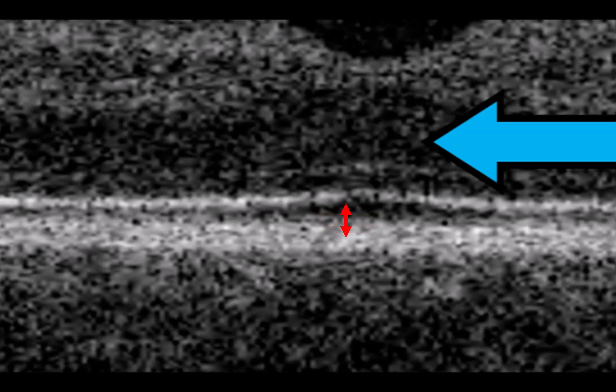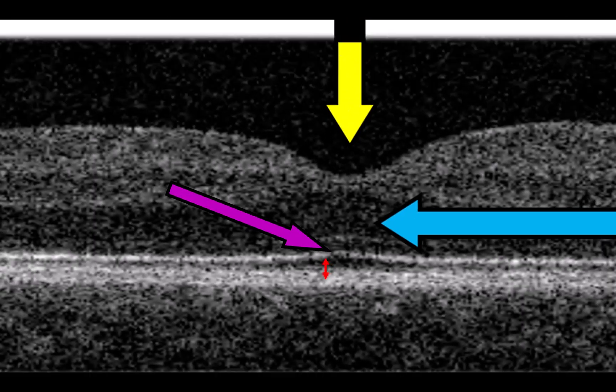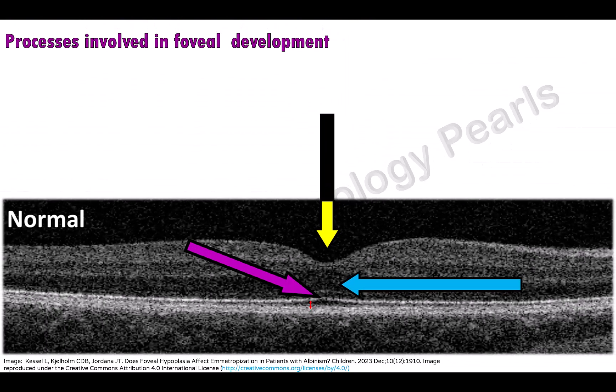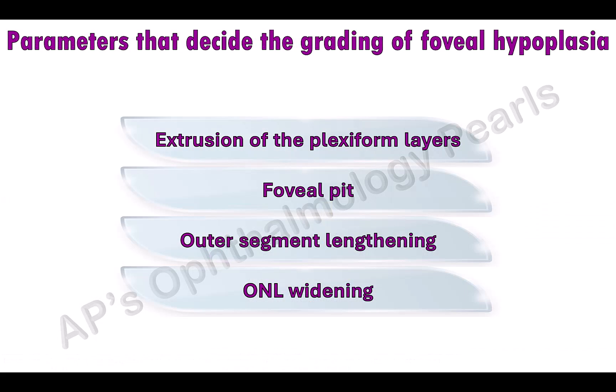This results in this little elevation here. When we have to decide the grade of foveal hypoplasia, these are the parameters that we have to look for in the OCT.